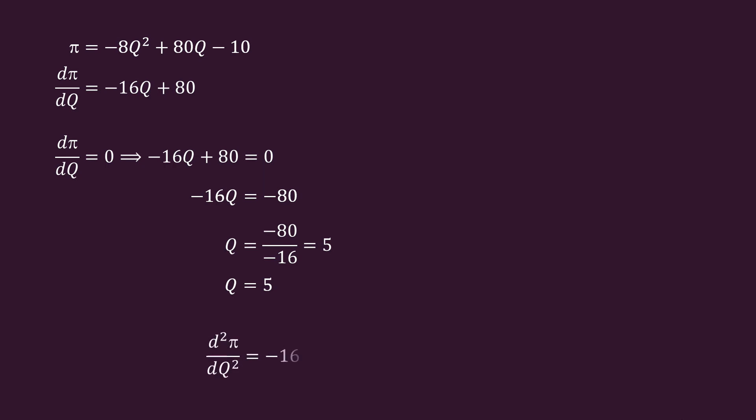To ascertain this, find the second derivative also. It is d squared π by dQ squared equal to minus 16 less than 0. Second derivative is negative. Hence, the function has a maximum at Q equal to 5.